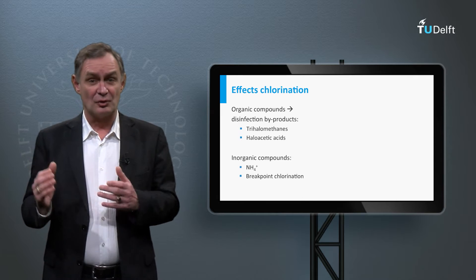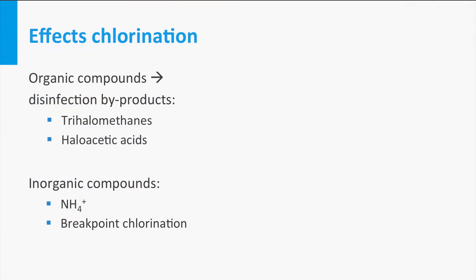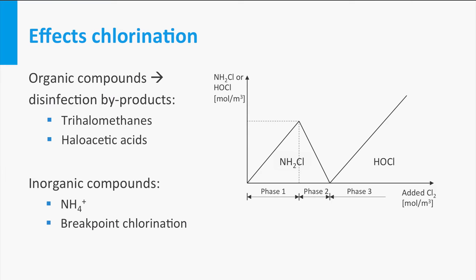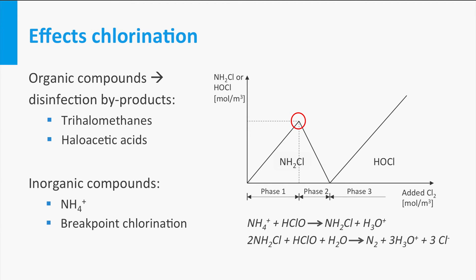This phenomenon is called breakpoint chlorination, shown in this figure. At this point, all the ammonium is converted into monochloramine via the reaction shown on the slide. The free chlorine is thus converted to what we call combined chlorine. When additional hypochlorous acid is added, it reacts with the monochloramine, and at the breakpoint, the reaction is over and all the ammonium is removed.